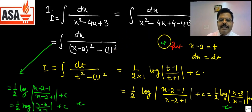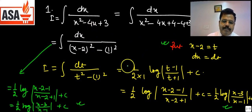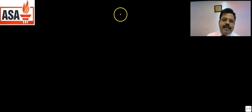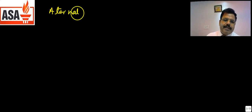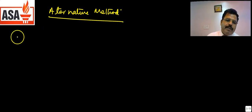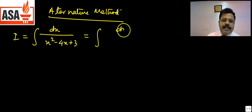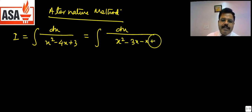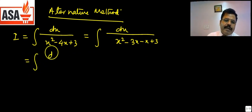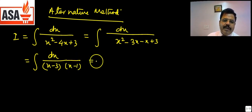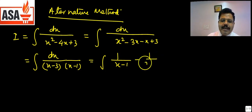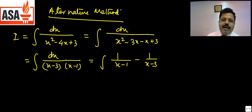There is also an alternative method. We can factor the denominator x² minus 4x plus 3 as (x minus 3)(x minus 1). Using partial fractions theory, we write the numerator as (x minus 3) minus (x minus 1), which gives 3 minus 1 = 2 on top. So we divide by 2.